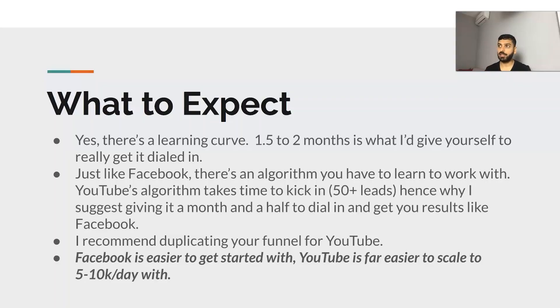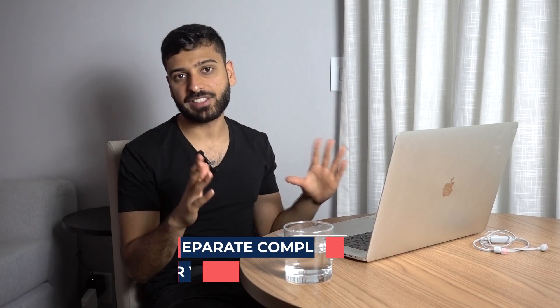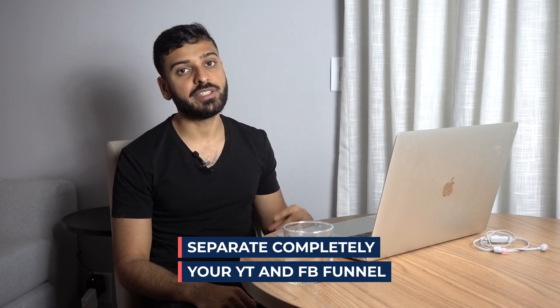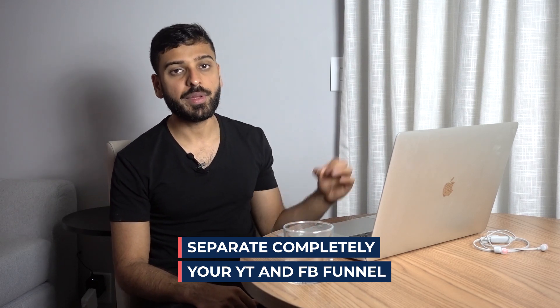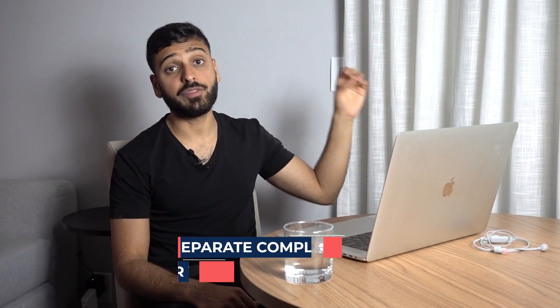I also recommend duplicating your funnel for YouTube — have a separate funnel just so you can have everything separated. Separate email automations, separate list, and that way when you get on the phone with somebody, you know 100% this was a lead that came in from YouTube. That allows things to be a lot easier on your tracking side, especially with high-ticket sales where you're doing phone calls selling $5,000 offers. You need very clean tracking so you can track the final sale back to the initial point of contact.